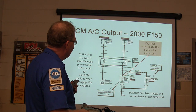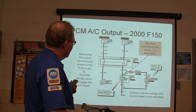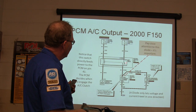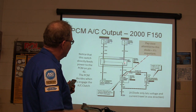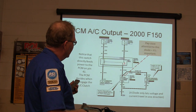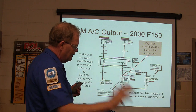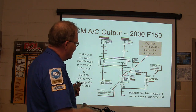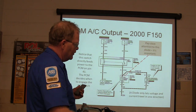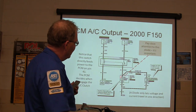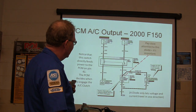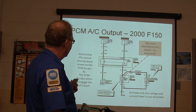Whenever you de-energize that compressor clutch, it causes a 400-volt spike that ordinarily chases its tail through the diode and goes away — it neutralizes that spike. Relays also have a clamping resistor wired parallel to the coil for the same reason. There was also a wide-open-throttle relay — a normally closed device on earlier Fords — that would drop the compressor out whenever you gave it the gas.